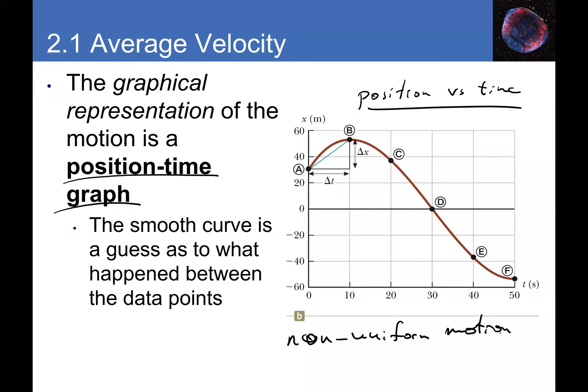This particular motion is an example of non-uniform motion, meaning the car is speeding up or slowing down. Non-uniform means changing speed or changing velocity. This type of curved position-time graph represents non-uniform motion.